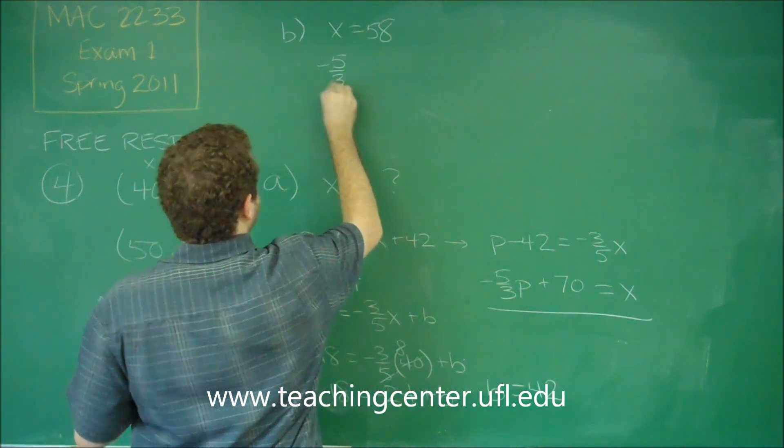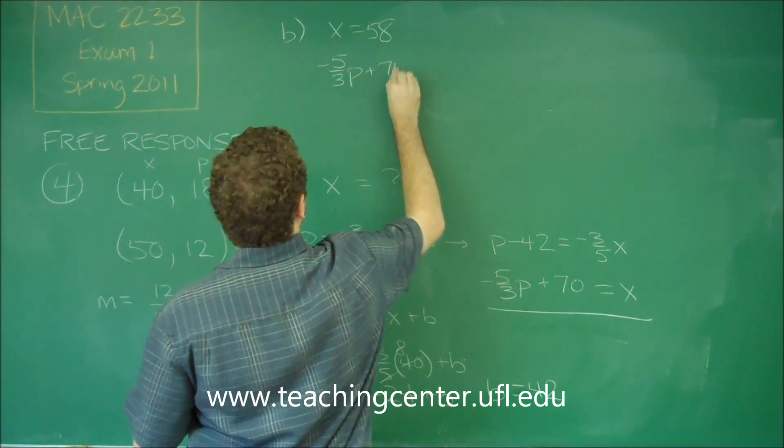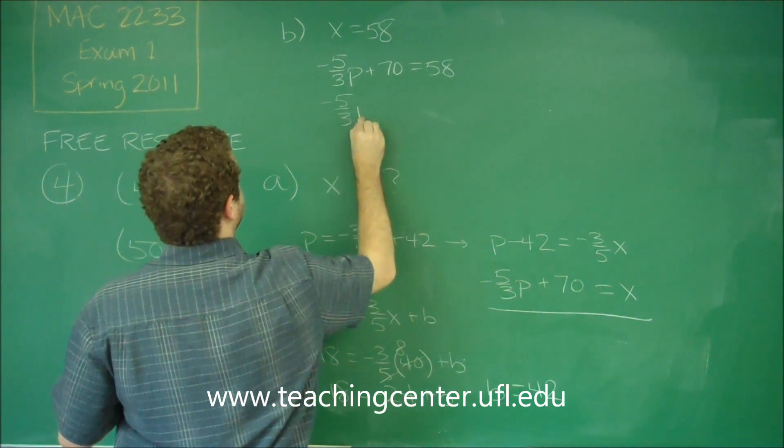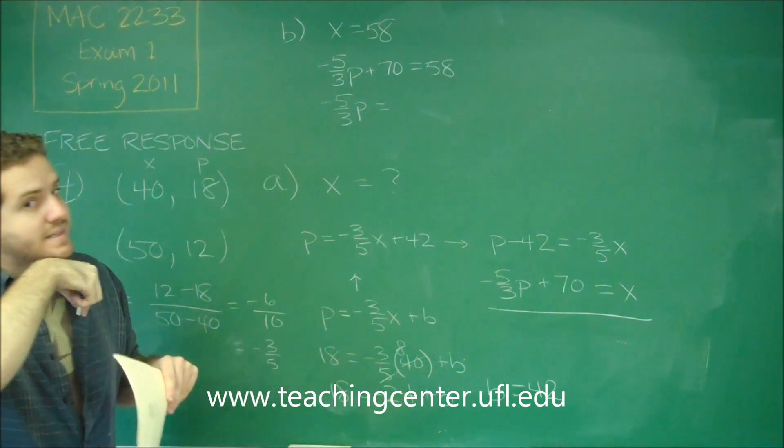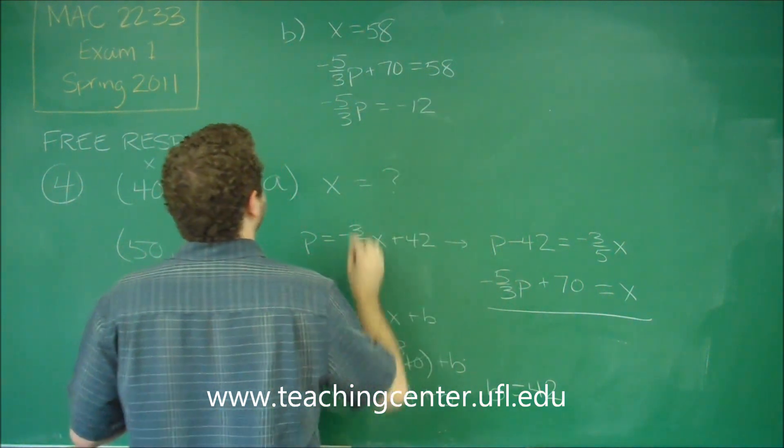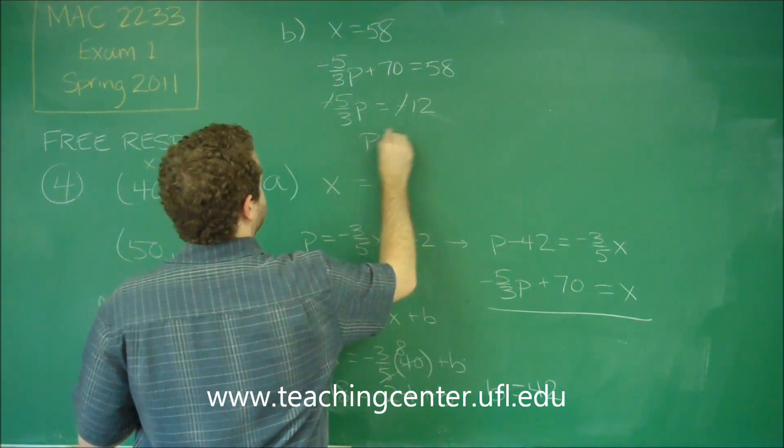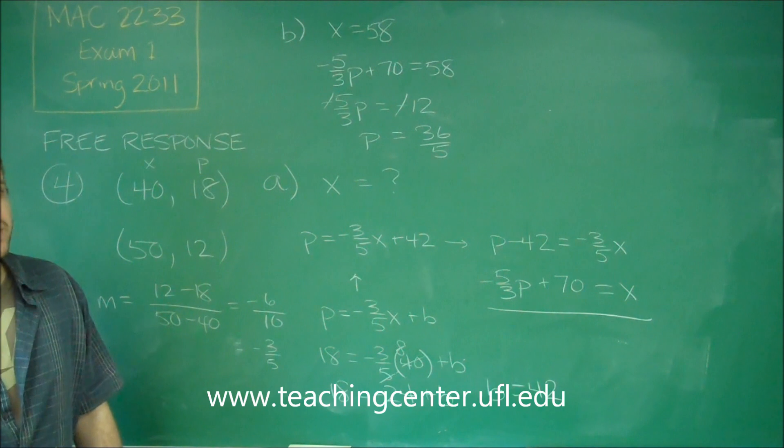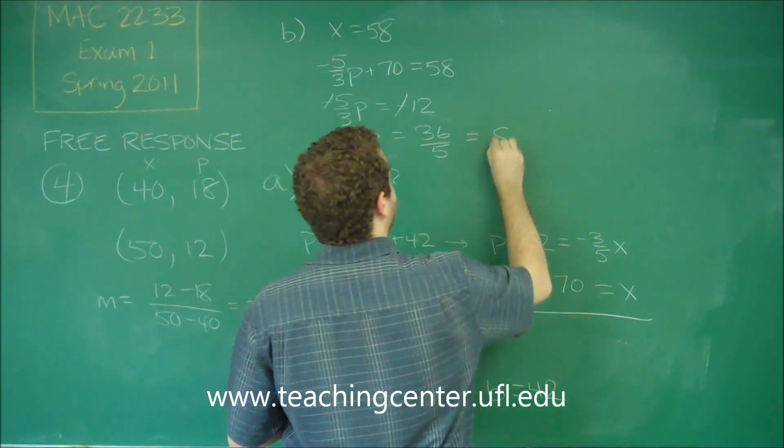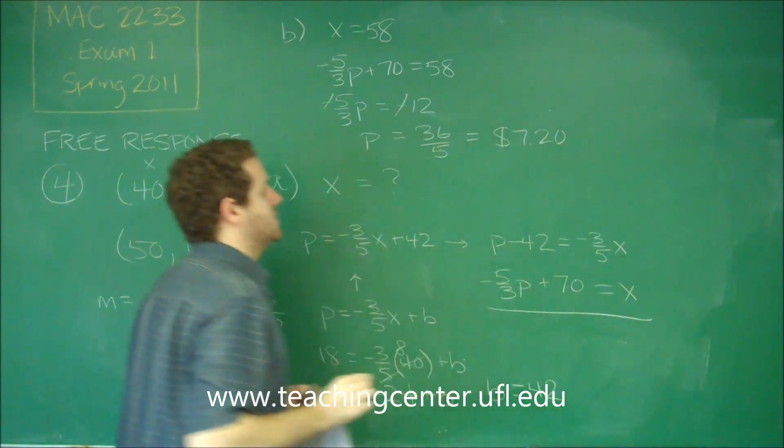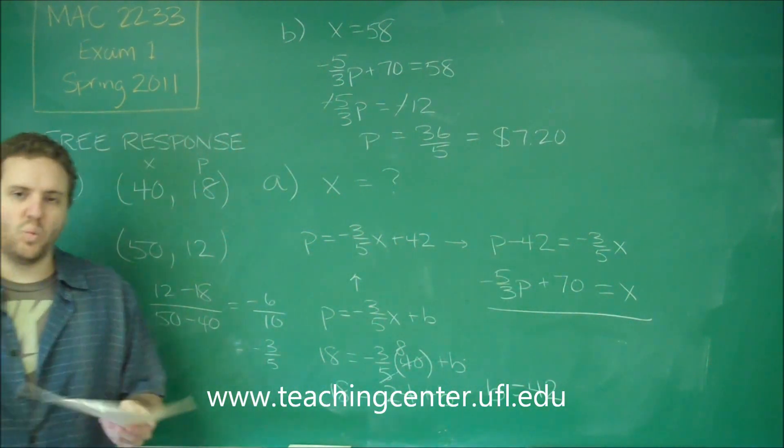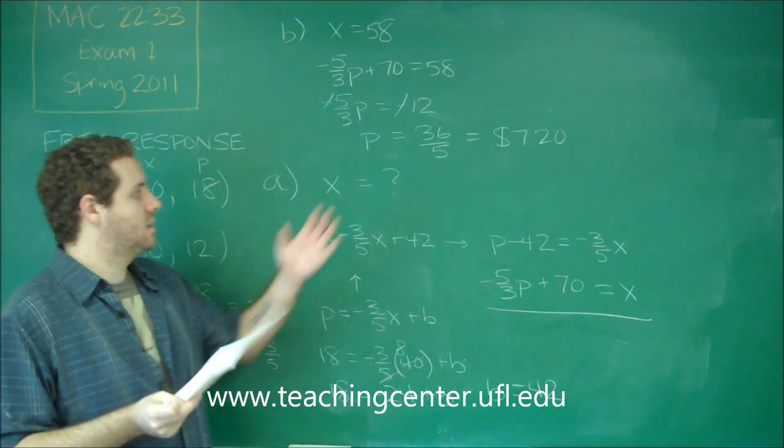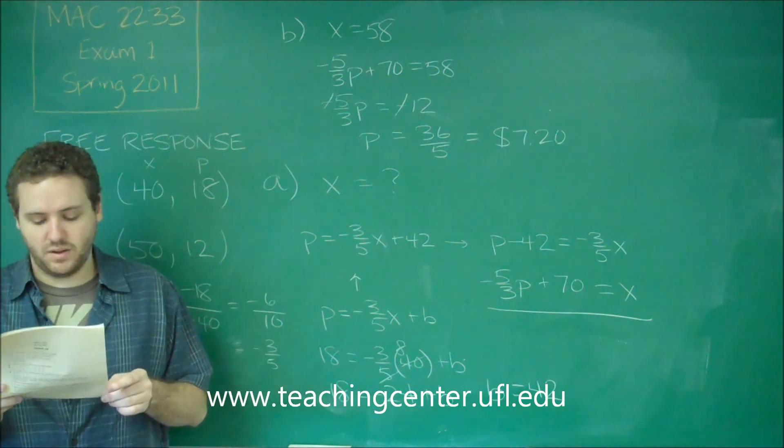So, what was the price? We can use this function right here. We get negative 5 thirds P plus 70 equals 58. Negative 5 thirds P equals... If we do 58 minus 70, we're going to get negative 12. Negatives cancel out. P is equal to 36 over 5. In other words, 7 and 1 fifth, which in dollars and cents, would be 7 dollars and 20 cents. 1 fifth is 0.2. So, if he sold 58 t-shirts, that must mean that the price he had knocked down to 7 dollars and 20 cents.